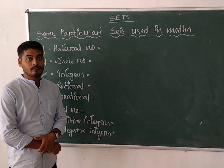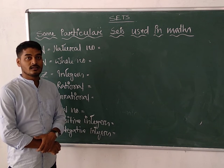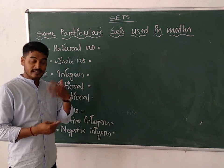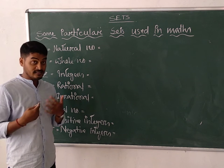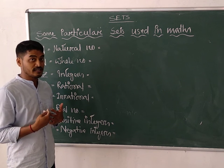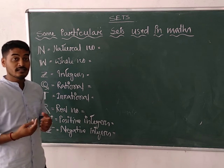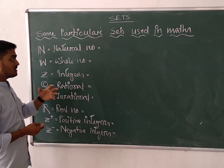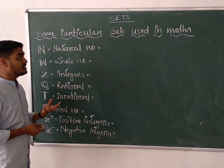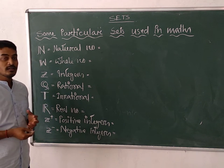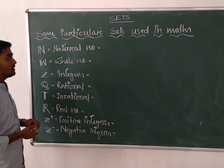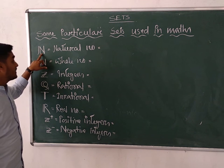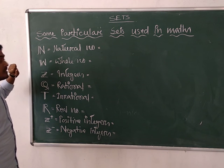But some specific sets exist in our maths and they have a specific name. To distinguish between general sets and these specific sets, we use bold letters — generally in our textbook bold letters are used. But since it is not easy to write bold letters, we use a specific symbol. For example, this is nothing but an N; in the textbook bold letters are written there, but I have written N in this special way.